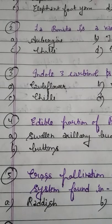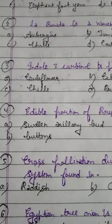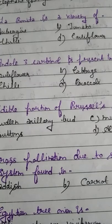Question number 3. Indole-3-Carbinol is present in: Option A: Cauliflower. Option B: Cabbage. Option C: Chili. Option D: Broccoli. The correct answer is Broccoli — wait, actually Broccoli is Brassica oleracea var. italica, its origin is considered to be in Italy, and it contains a compound called sulforaphane which is anti-cancerous.